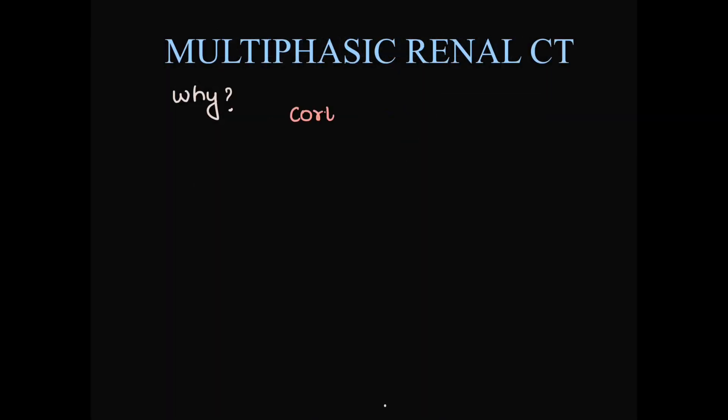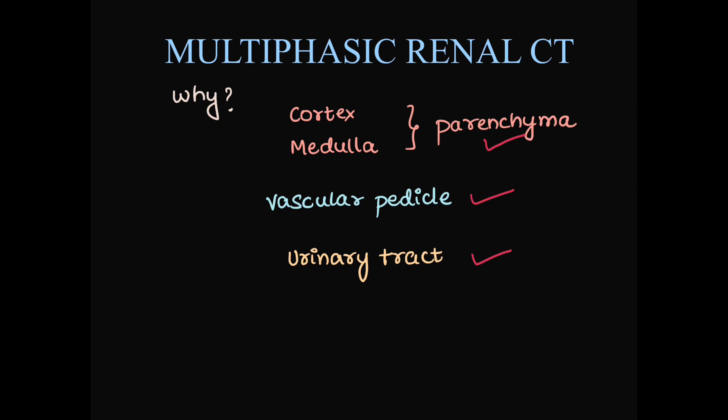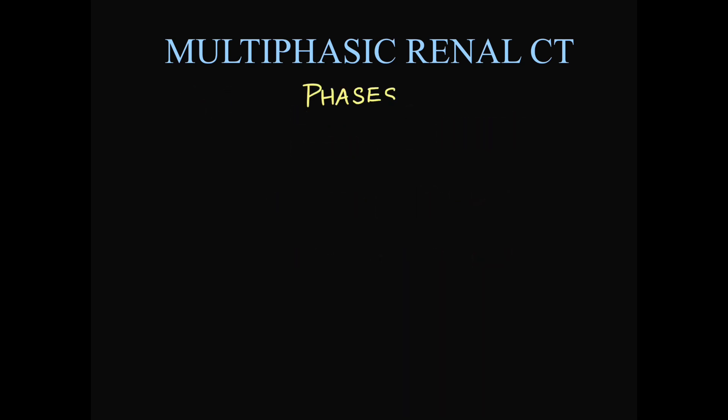First of all, why do we need to perform a multiphasic renal CT? The cortex and medulla constitute the renal parenchyma. Also along with that we have vascular pedicle and urinary tract. All these three enhance separately in different phases which we will see. In order to see this differential enhancement, we have four phases.